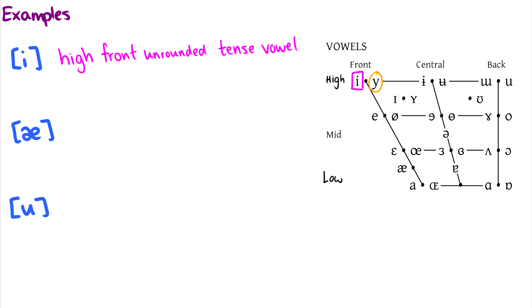Let's do ae. Ae is in kind of a weird spot here. But we'll consider this low. It's in between low and mid, but we'll still consider it low. So we could call this a low front. It is unrounded. And it is a lax vowel. So ae does not have the same tenseness that ee or oo has.